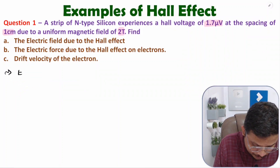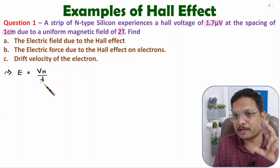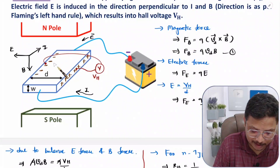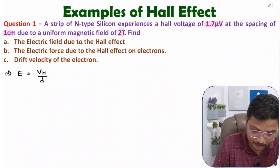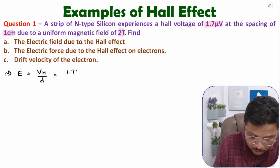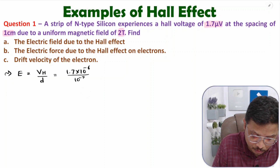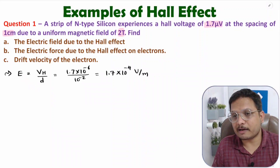Electric field due to Hall effect equals Hall voltage divided by the spacing at which we are measuring Hall voltage. Here the spacing d is one centimeter, so: Hall voltage = 1.7 microvolt = 1.7 × 10⁻⁶ V, divided by spacing = 1 cm = 10⁻² m. This gives 1.7 × 10⁻⁴ volt per meter.